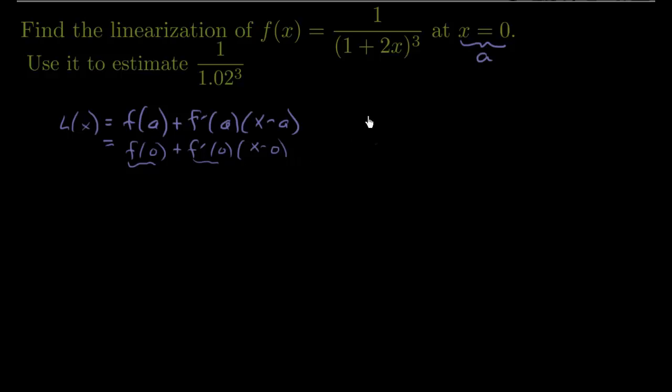Now recall linearization is actually just finding the tangent line. And when we found the tangent line, we needed two things: a point and a slope.